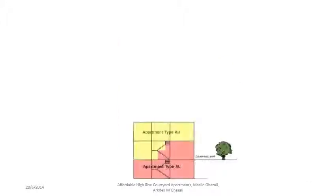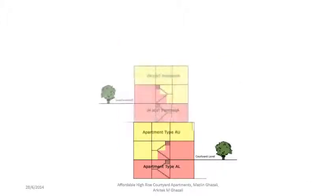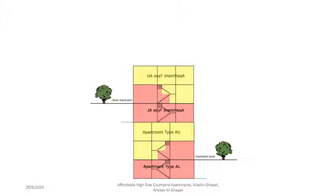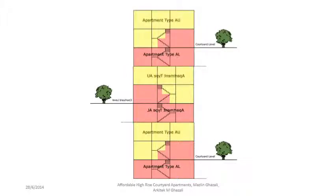Stacking two pairs of these interlocking apartments on top of each other produces a three-storey high sky court. However, stacking these apartments on top of each other such that the courtyard is flipped from one side to the opposite side produces a six-storey high sky court.